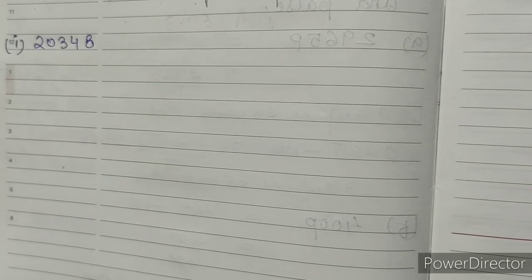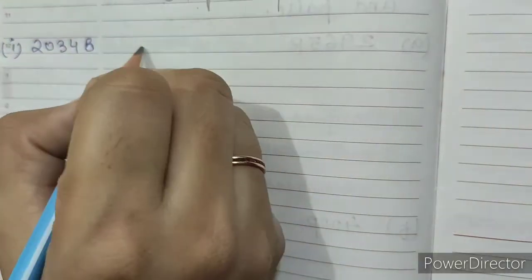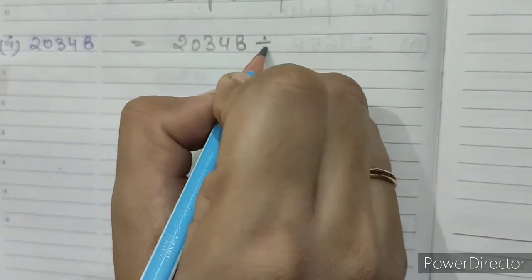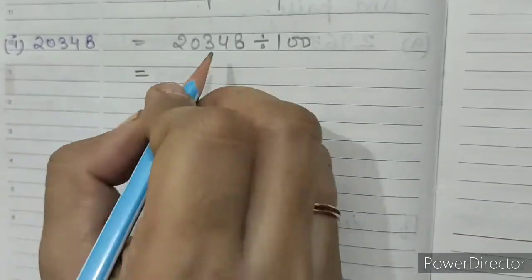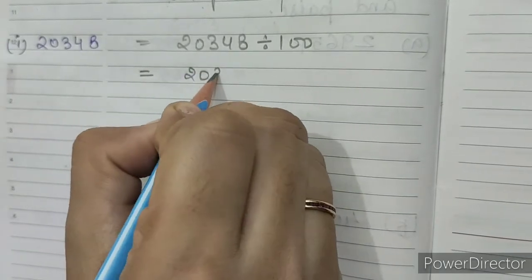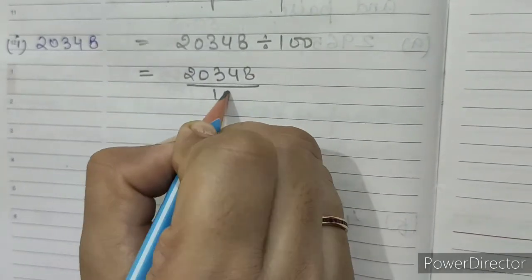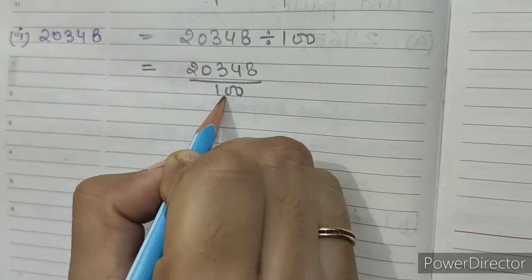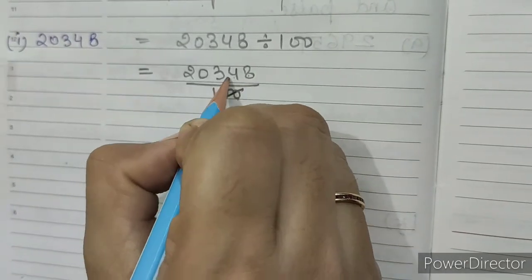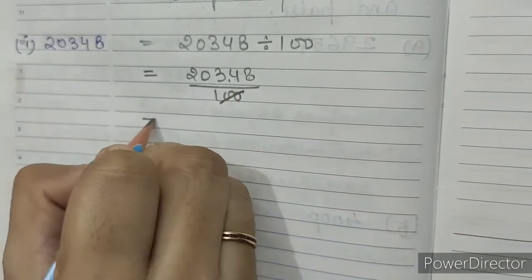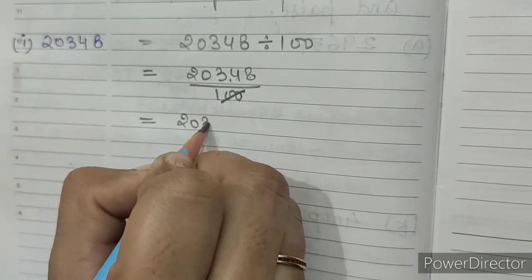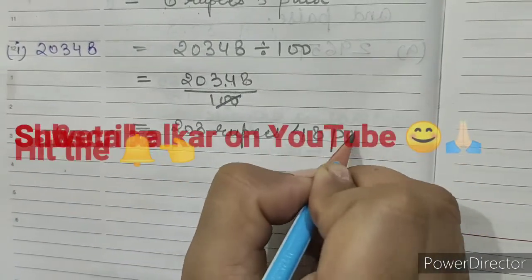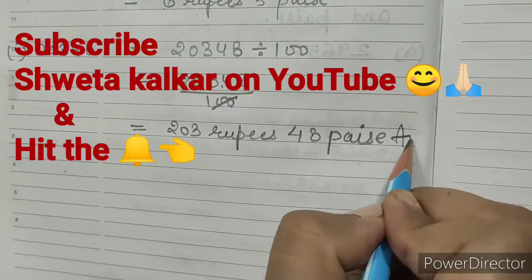I. 20348 paise. We'll write 20348 ÷ 100. In 100, there are two zeros — count two places from the right and place the decimal. So our answer is 203 rupees, 48 paise. This is our answer.